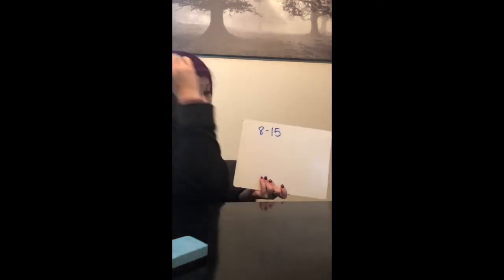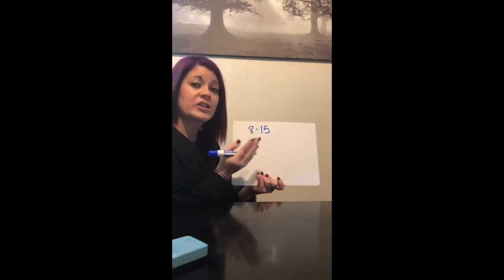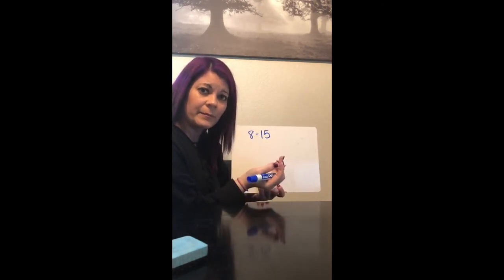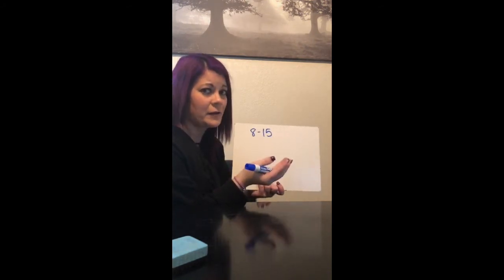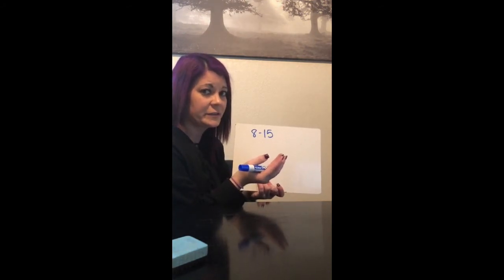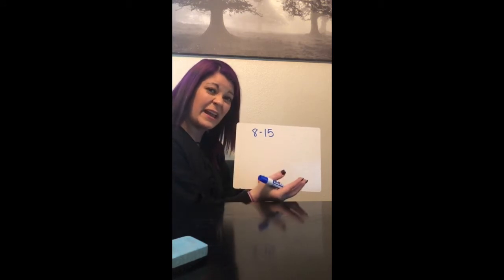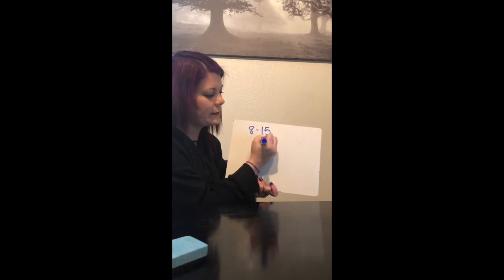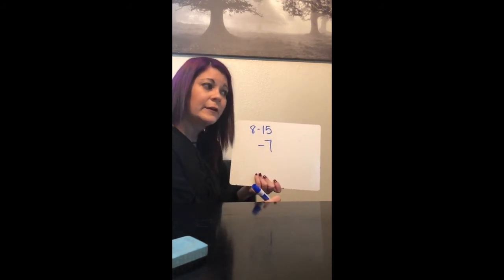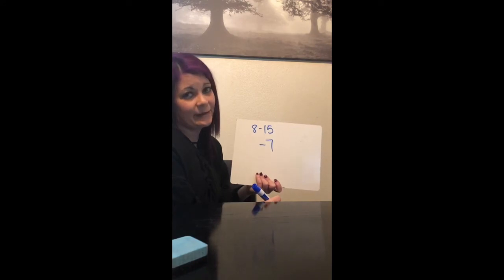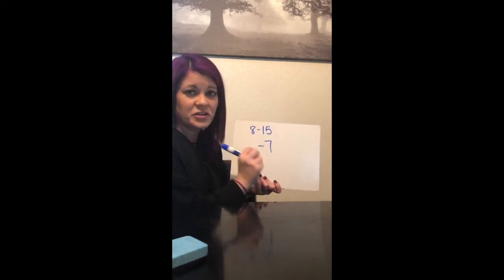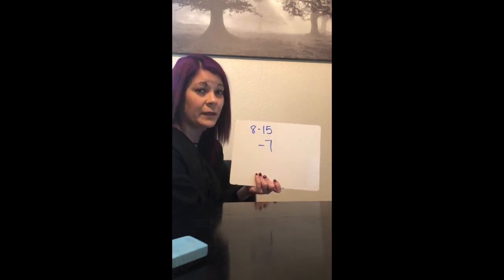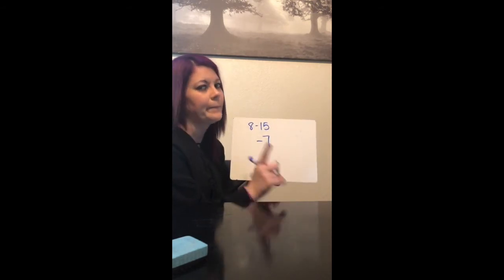8 minus 15. Subtraction is giving away money. In this case I start with $8 in my piggy bank, and now my mom is asking for $15 because I owe her $15. So I give her my $8, but I still owe her $7 more dollars. 8 minus 15: I have $8 but I have to give her $15. I gave her my $8, but I still owe her $7. And owing money is negative — it's bad when you owe money.